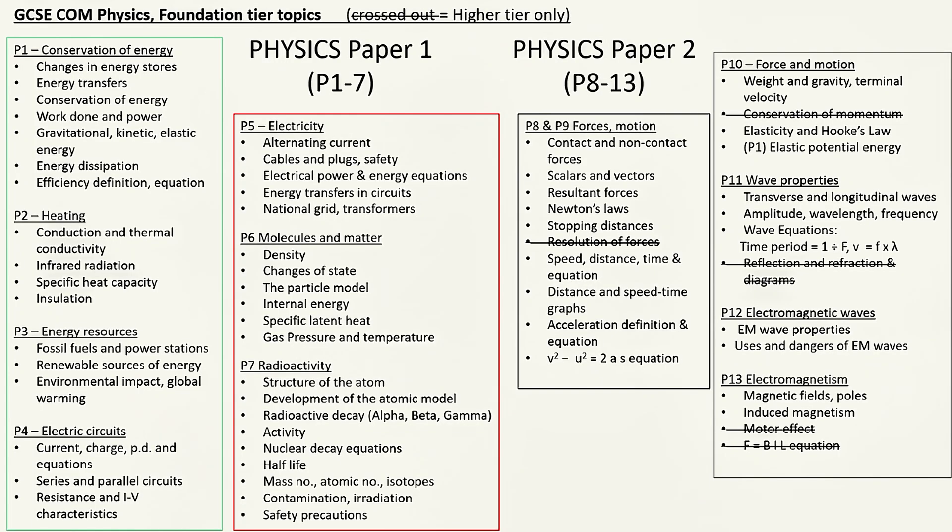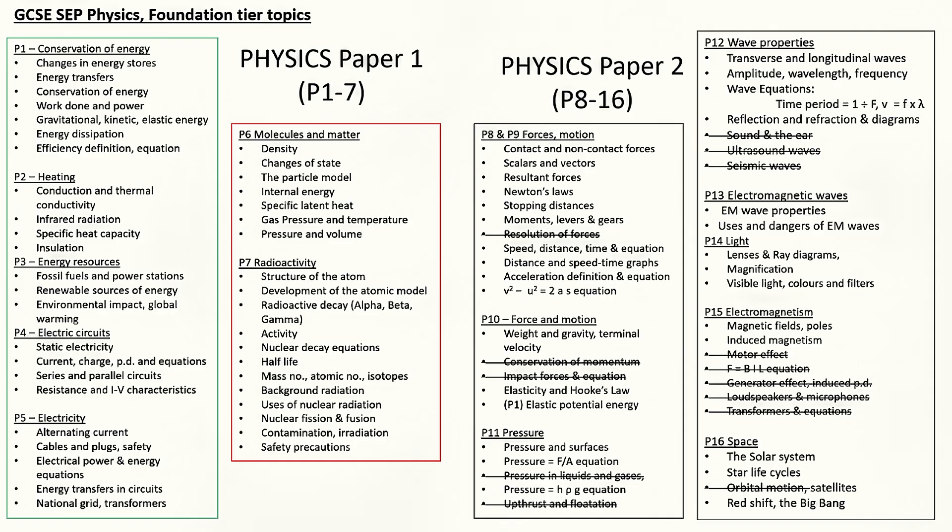For those of you doing foundation tier, I've just included a summary of topics that you won't need to know about as well because they're higher tier only. So this is the list for combined science. Anything crossed out is higher tier only, so you don't need to worry about. And if you are doing separate science foundation, this is the list you need to look at. Anything crossed out, don't worry about.